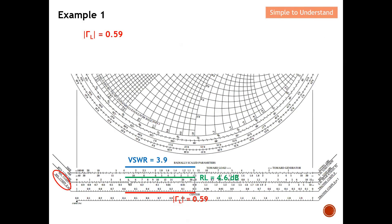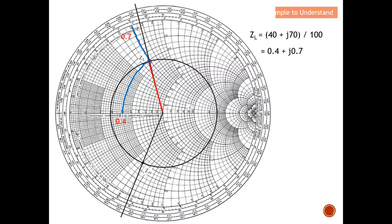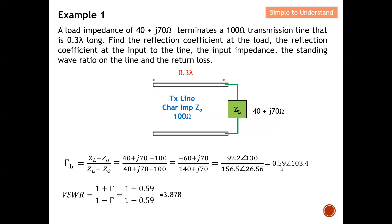Using the same line placed horizontally against the VSWR scale, I can read VSWR ≈ 3.9. I can also read the return loss, which comes out to about 4.6 dB. Comparing with the calculated value: the reflection coefficient magnitude is exactly 0.59 on the Smith chart — a perfect match with the calculation.